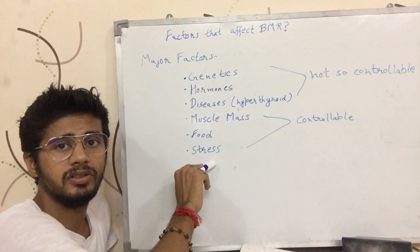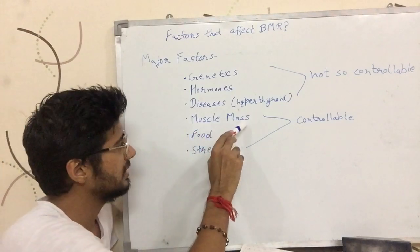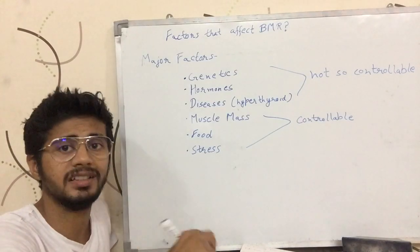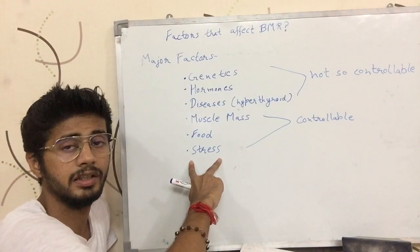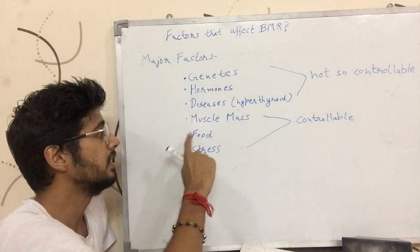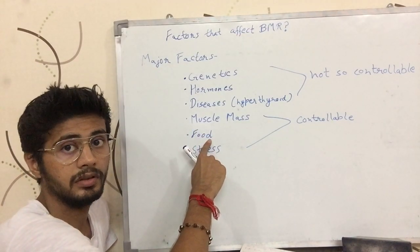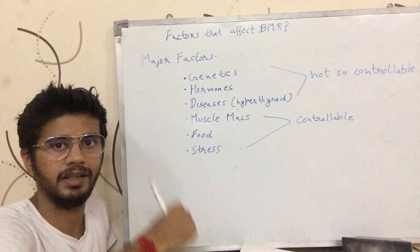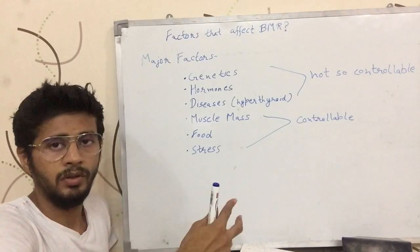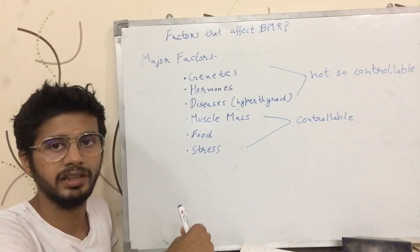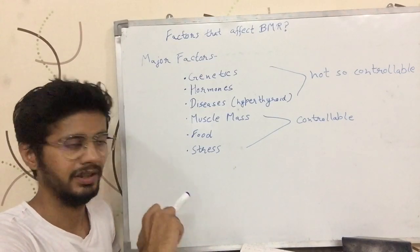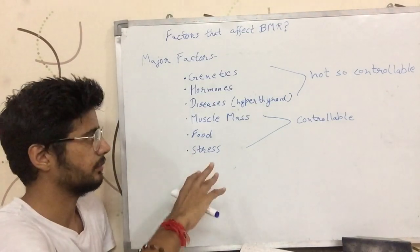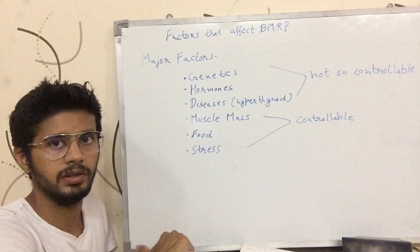So muscle mass, food, and stress are factors that are more or less controllable by you. It is in your hands whether you want to be stressed or not, how much food you eat, and how much muscle mass you carry. If you have lesser muscle mass, you can work out and increase it. You are somewhat limited by your genetics, but it is still somewhat controllable.